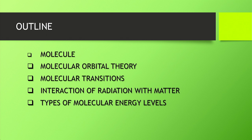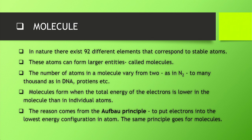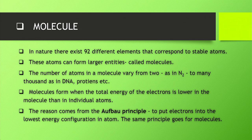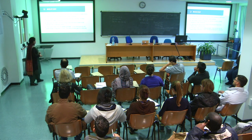In atoms we have only electronic levels, but in molecules we have different kinds of energy levels. In nature there exist 92 different stable elements corresponding to stable atoms. These atoms can form larger entities through covalent or ionic bonding, and those entities are called molecules. The number of atoms in a molecule can vary from two, like in nitrogen or oxygen, to many thousands, like in DNA and proteins. Molecules form when the total energy of the electrons is lower in the molecule than in the individual atoms — the same Aufbau principle that places electrons into lowest energy configurations in atoms applies to molecules.